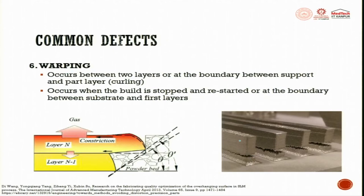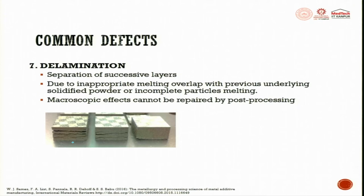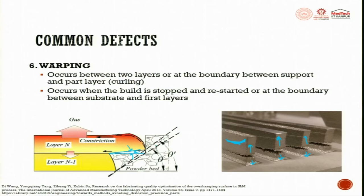Warping occurs because of thermal gradient. Between the layers, delamination happens which tries to break the part. A sample which was supposed to be flat becomes warped. It occurs between two layers or at the boundary between the support and the part layer. Curling occurs when the build is stopped and restarted, or at the boundaries between the substrate and the first layer. Because of the pulling force, you see delamination - this is a warping defect.